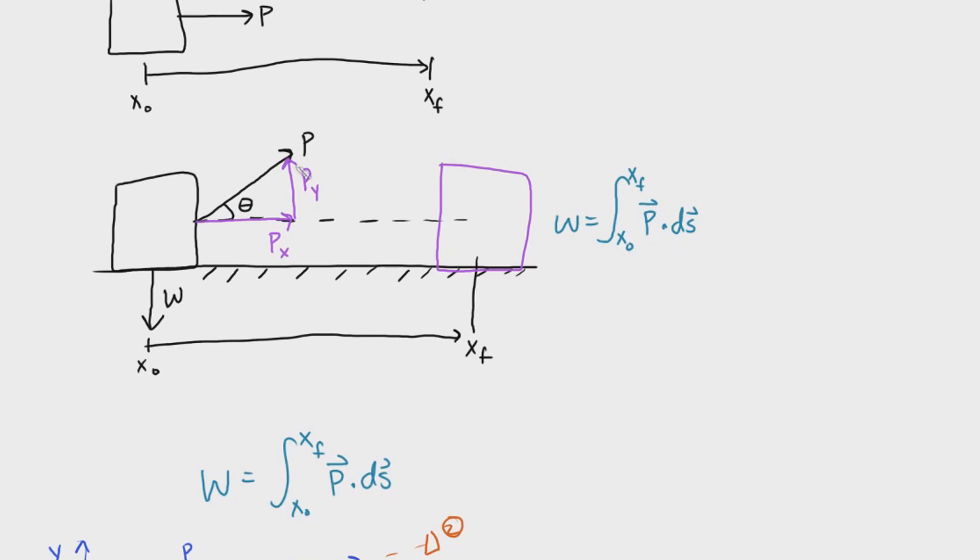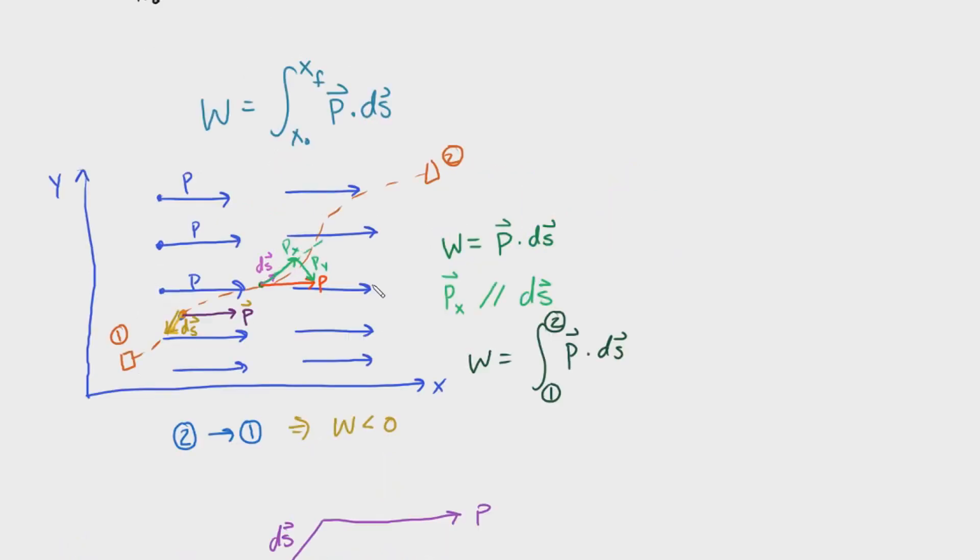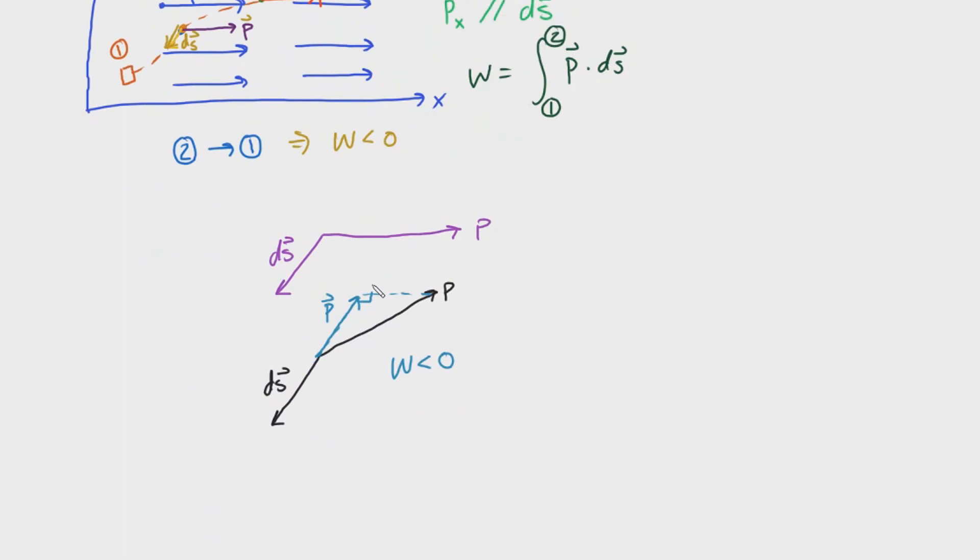That's clearly defined in this example right here where we say py is going upward and it doesn't cause the box to move upward at all. Therefore, we could say that py does no work, and the only work being done is by this force px. So hopefully that was clear. We will start using the ideas of work in future examples.